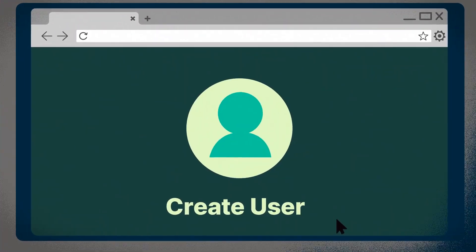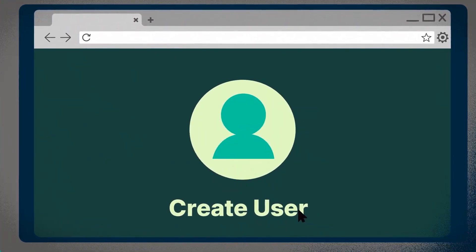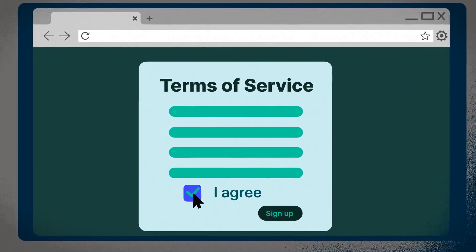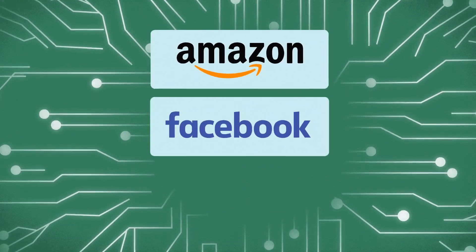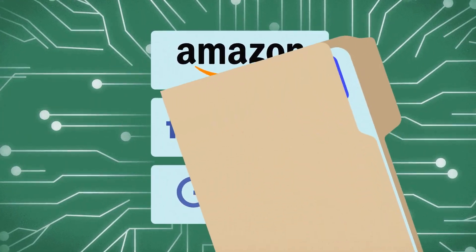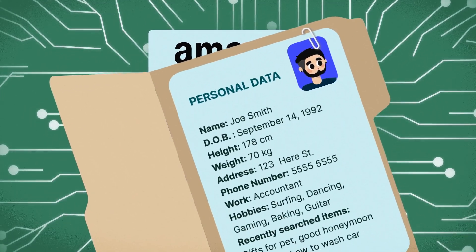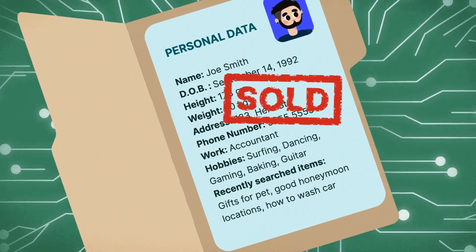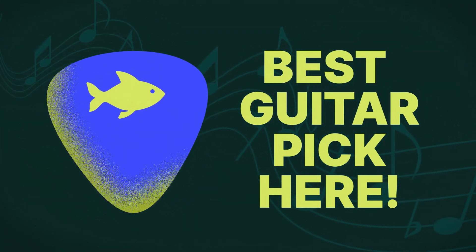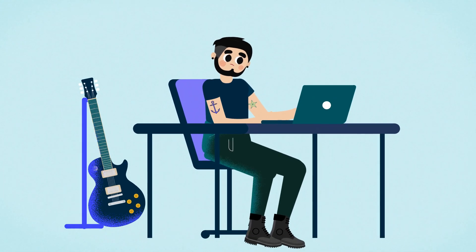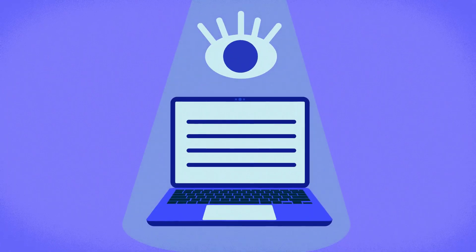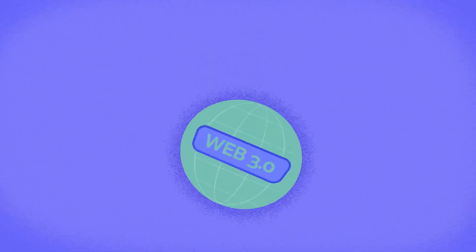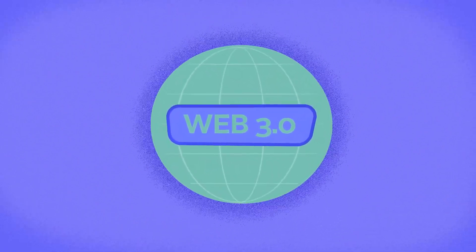Going back to our Maldives example, to participate in Web 2.0, users are typically required to create accounts and agree to the terms of service for websites like Amazon, Facebook, or Google. By doing this, these companies now have the permission to collect troves of users' personal information that can be used in a myriad of ways to profit off of, such as being sold to third parties for targeted advertising. This is the privacy and data ownership issue plaguing today's Internet, and one of the main reasons for transitioning to Web 3.0.